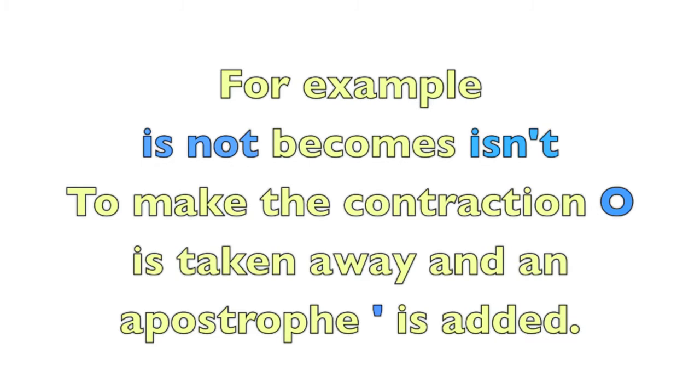For example, is not becomes isn't. To make the contraction, o is taken away and an apostrophe is added.